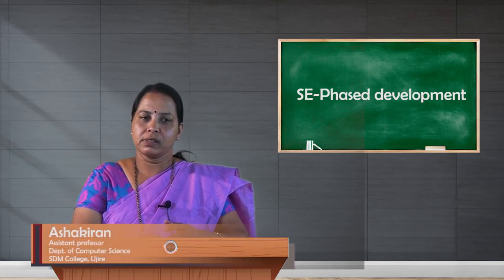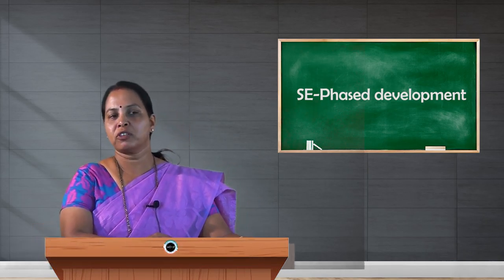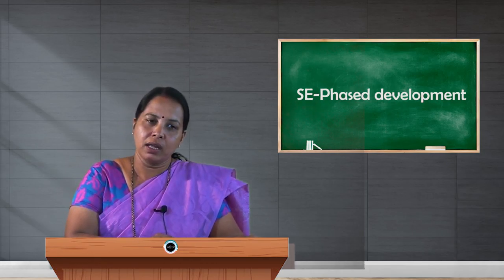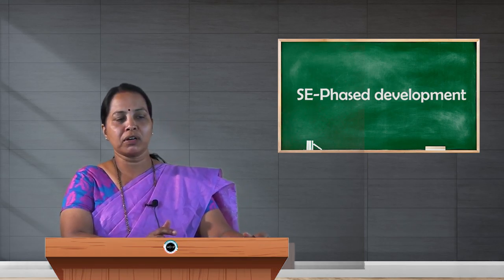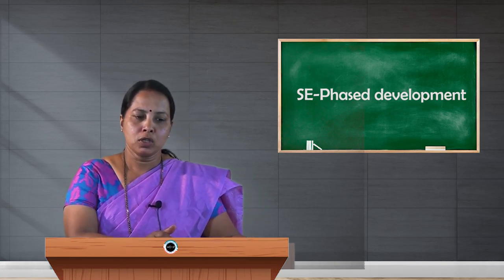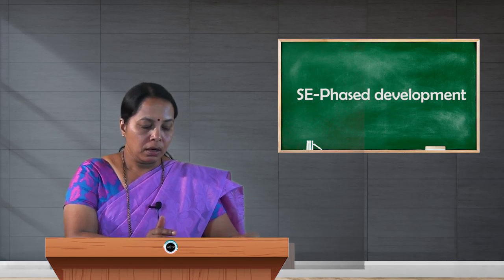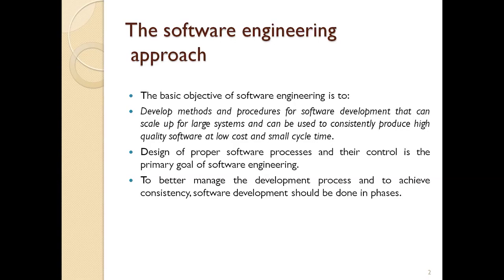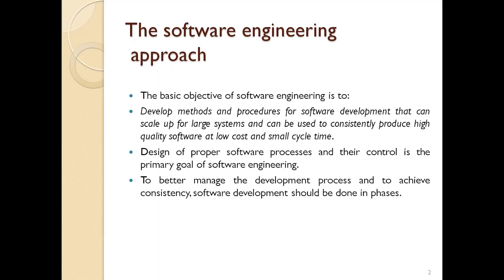In today's session we will discuss the different phases of software development. The main goal of software engineering is to achieve quality and productivity consistently through the usage of good technology, good resources, and a systematic approach. The objective is to develop methods and procedures for software development that can scale up for large systems, produce high quality software at low cost and small cycle time.